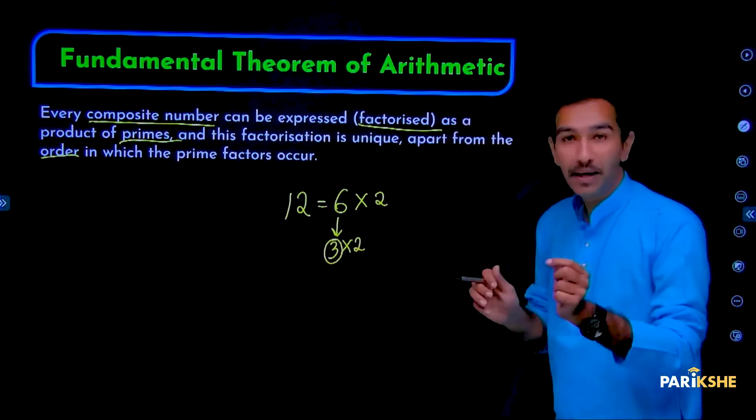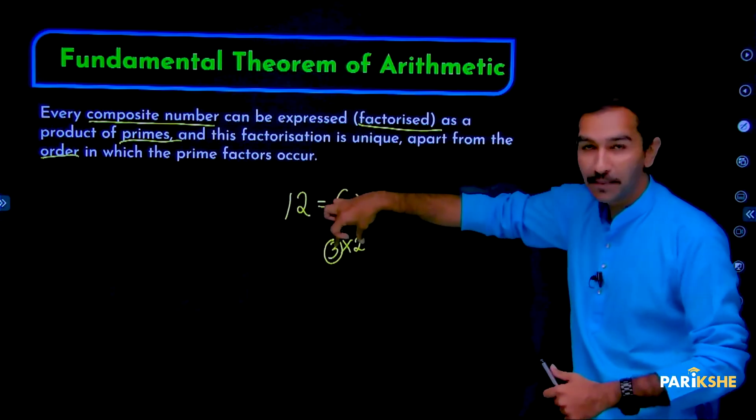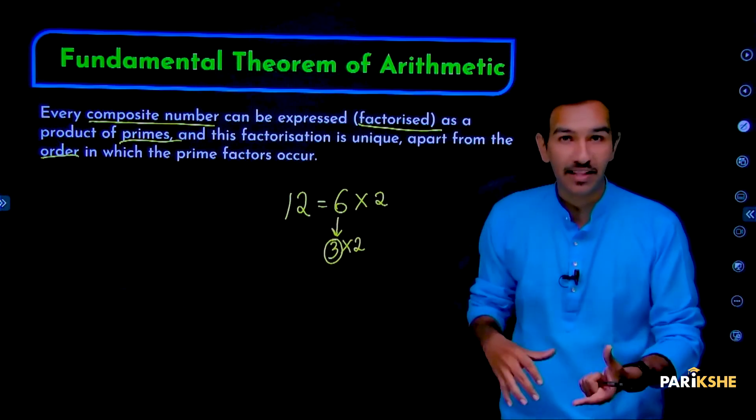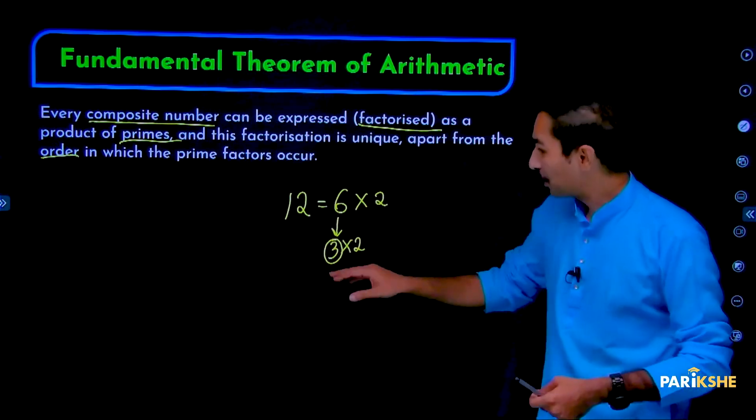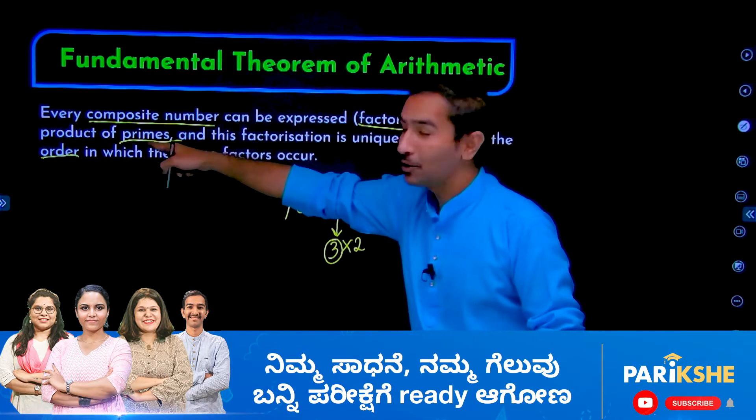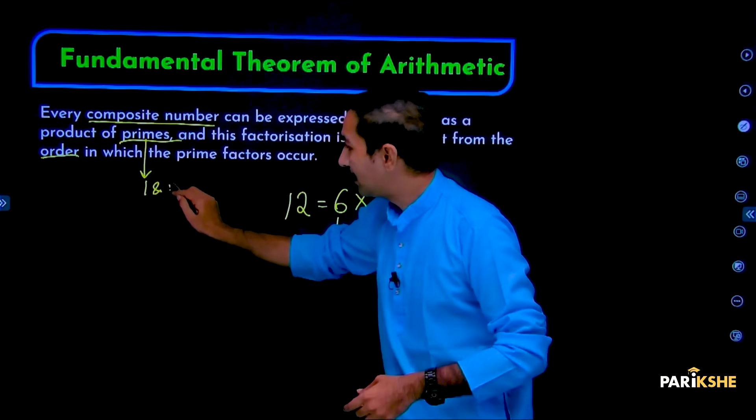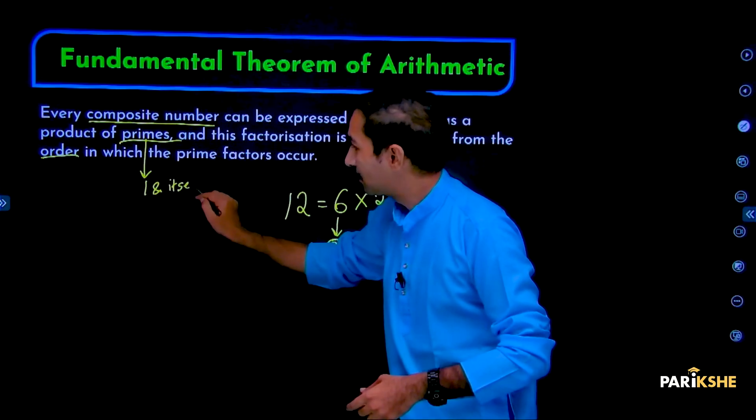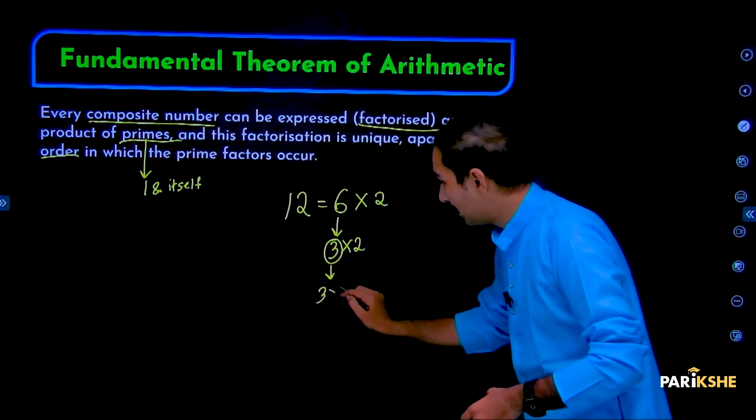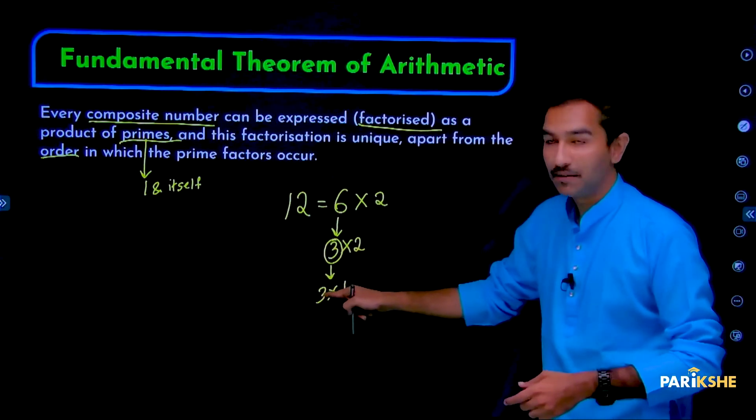Is 3 composite? If 3 is composite, we should be able to write 3 as 3 into 1. Similarly, 2 can be written as 2 into 1. These numbers cannot be expressed in any other way. For example, we wrote 6 as 3 into 2, but 3 can only be written as 3 into 1, and there's no other possibility.